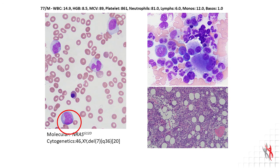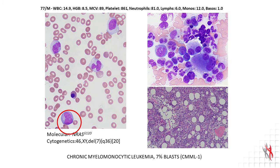Additional workup included molecular diagnostic evaluation, which revealed the presence of a mutation in the NRAS gene — known to be an activating oncogenic mutation. Cytogenetic analysis also revealed the presence of a karyotype that is aberrant with a deletion 7q, a feature not uncommonly seen in CMML. As a result, the full workup allowed us to establish a diagnosis of CMML with 7% blasts, and at this blast percentage, a CMML1 subgroup would be appropriate per current WHO criteria.